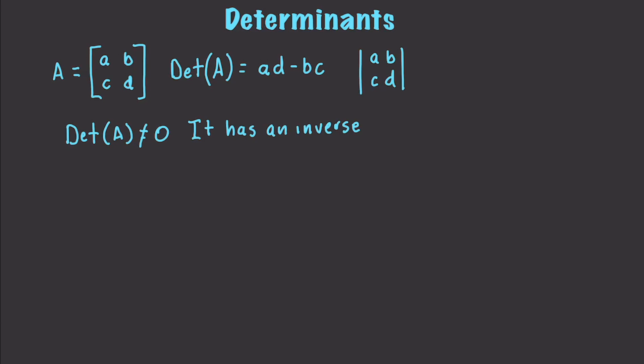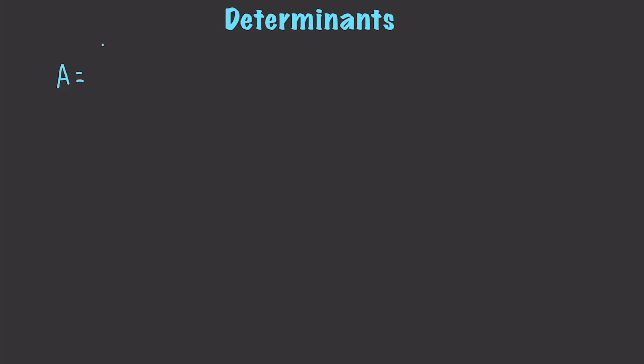But you may ask yourself, what do I do if I have a 3 by 3 matrix? So let's say we have matrix A with these letters inside of it. Basically, to find the determinant of A, we are just going to be using parts of the matrix.